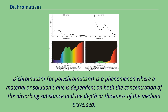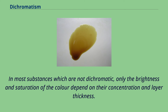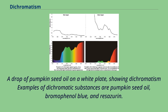Dichromatism is a phenomenon where a material or solution's hue is dependent on both the concentration of the absorbing substance and the depth or thickness of the medium traversed. In most substances which are not dichromatic, only the brightness and saturation of the color depend on their concentration and layer thickness. Examples of dichromatic substances are pumpkin seed oil, bromophenol blue, and resazurin.